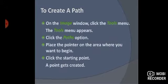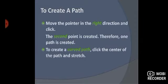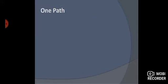To create a path: go to the image window, click on the Tools menu, and click on the Path option. Place the pointer on the area where you want to begin, then click on the starting point to create it. Move the pointer in the right direction and click — a second point is created, forming one path. To create a curved path, click on the center of the path and stretch it.